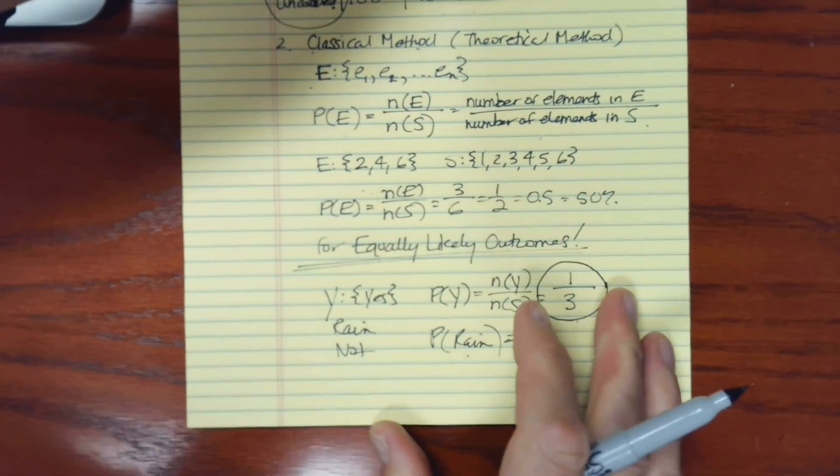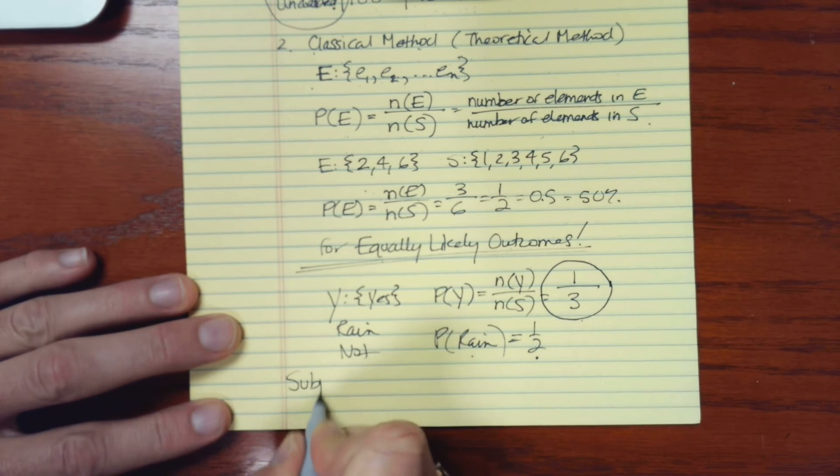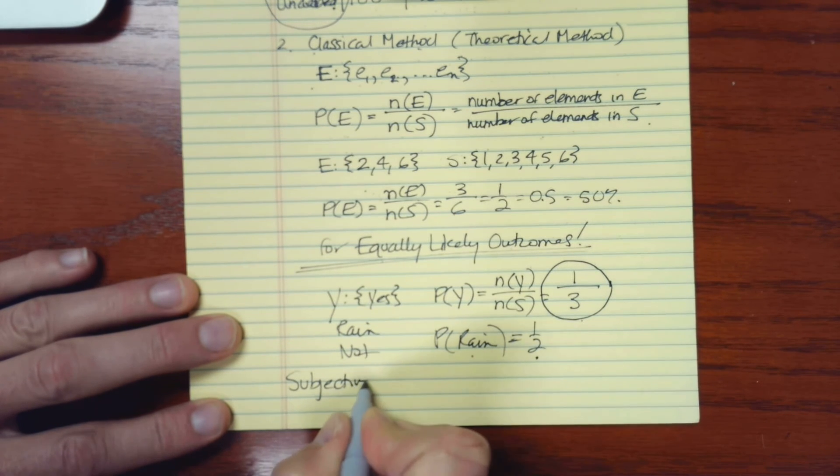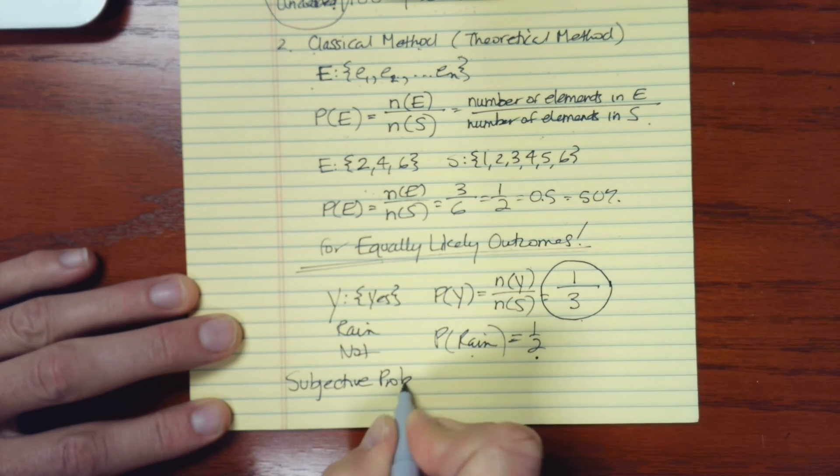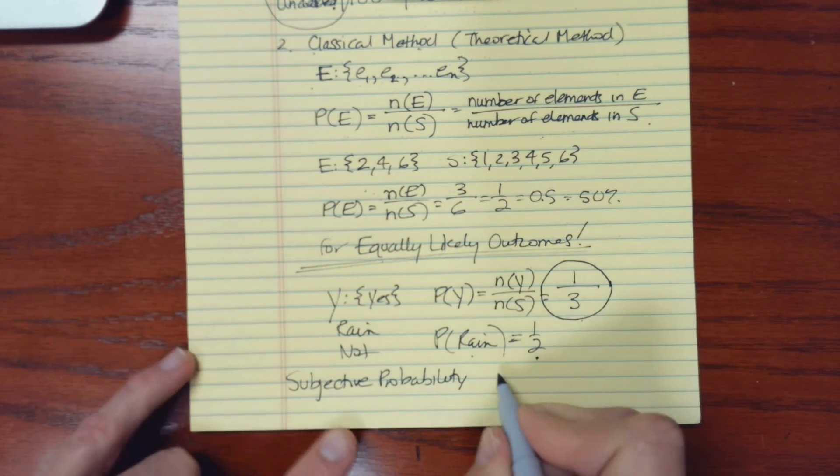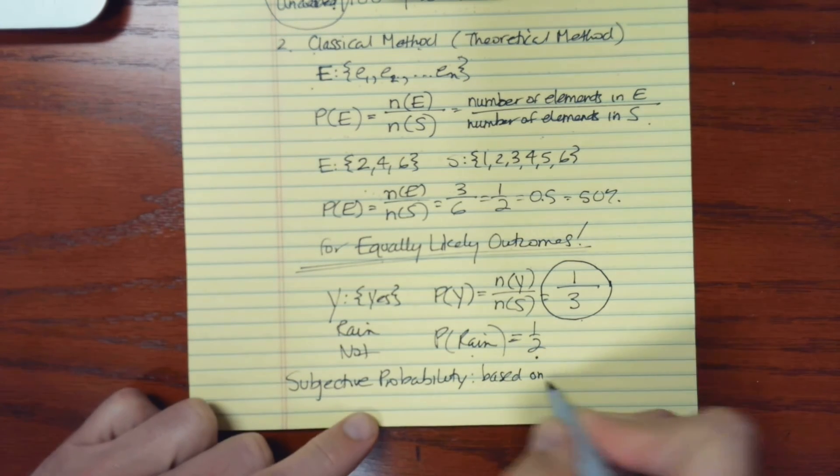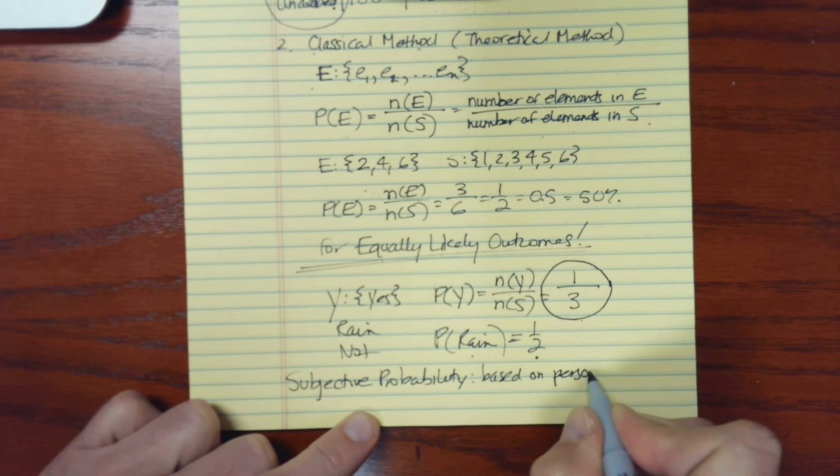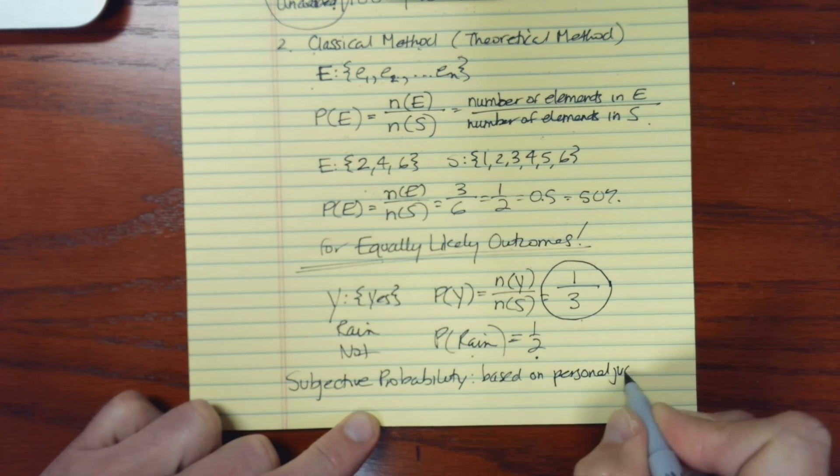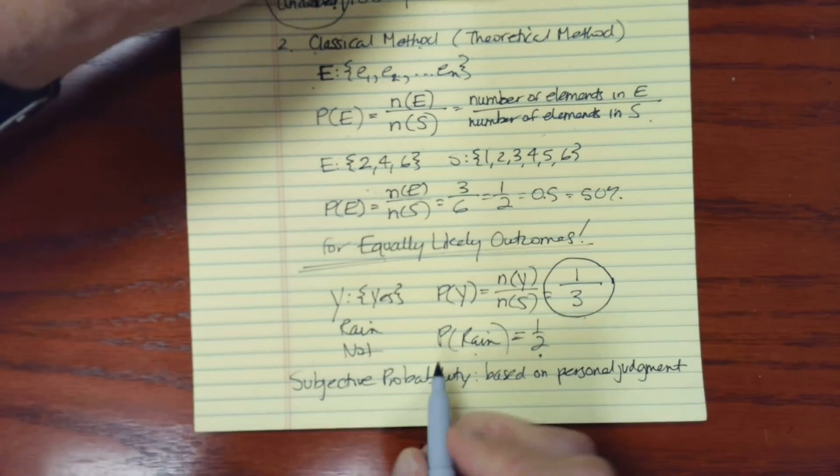This is not really a computation, but I'll just mention that there is such a thing as subjective probability. This is just a probability that is based on personal judgment. Now, that doesn't mean that it's an uneducated guess. Sometimes we'll get subjective probabilities from experts, and they may be pulling from a wealth of knowledge in order to give their personal judgment.